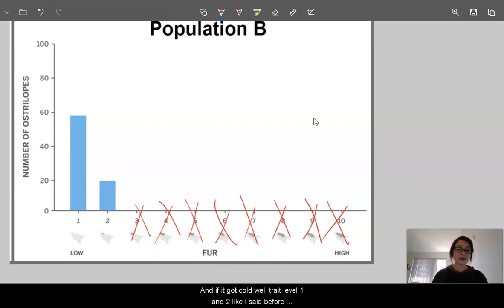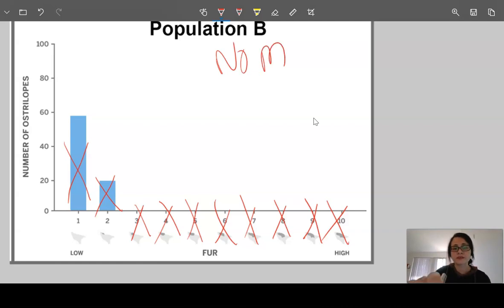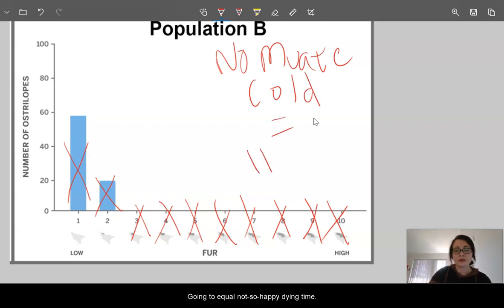And if it got cold, well, trait level 1 and 2, like I said before, is almost hairless. I would expect these to not even survive. So population B with no mutations not so happy dying time.